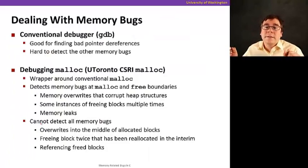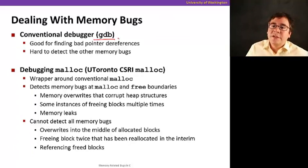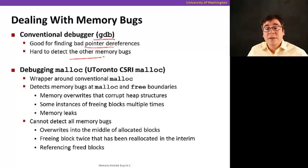So there are many ways of dealing with, well, I wish there were many ways. It's just a handful of ways of dealing with memory bugs. You can use the debugger, GDB. So it's good for finding bad pointer references, but it's hard to detect other memory bugs. For example, memory leaks are hard to detect, to find with debuggers.